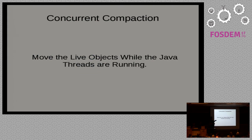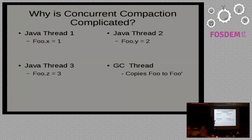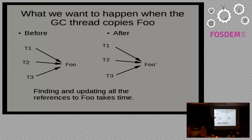Concurrent compaction — that's what Shenandoah does that's new and cool. We are able to compact objects while the Java threads are running. Why is concurrent compaction complicated? If you have several Java threads running that are all setting fields in an object, and the GC thread is going to copy the object, all kinds of bad things could happen — somebody could write to it and the GC thread copies it and we lose the update, or these threads are writing to different copies. What you really want is all threads pointing to Foo, then flip a switch and have them all pointing to Foo prime. But we can't really do this — even with transactional memory, finding all the threads referencing Foo would take too long. And it's not just threads; objects deep in the heap could also point to Foo. Everything would have to get updated at the same time, and we can't do that.